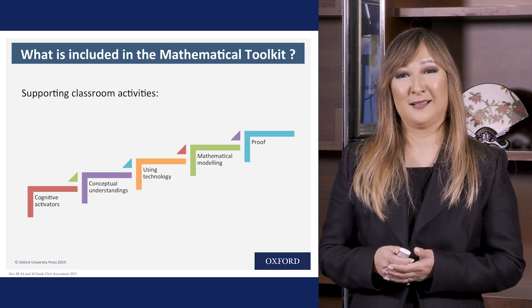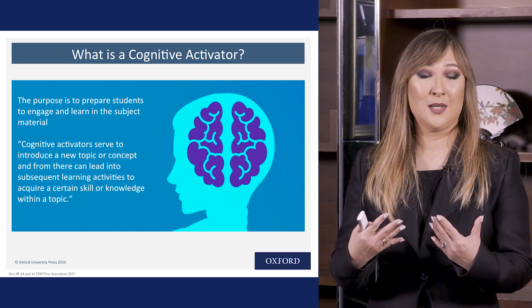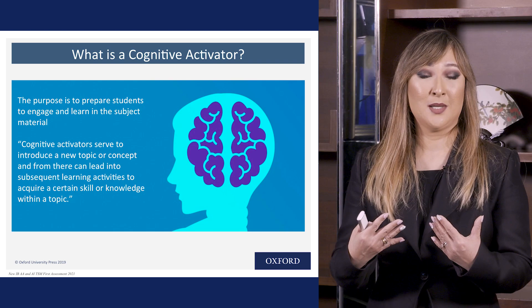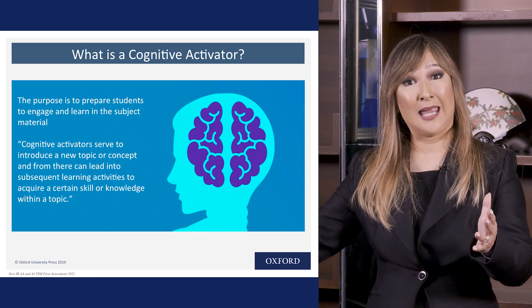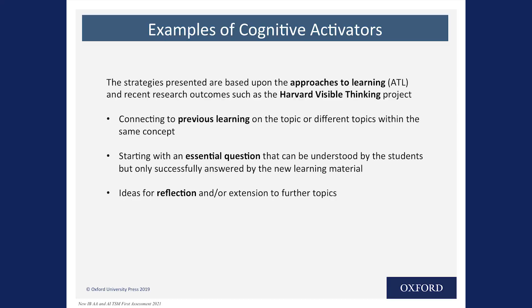So we're going to start with the cognitive activator. What is a cognitive activator? The purpose is to prepare students to start learning — to engage and learn the content. They serve to introduce any new topic or concept, and from that point students are able to take that introduction and learn further and deeper within the topic. We take lots of examples from the Harvard Visible Thinking Project, from Project Zero, and these really do align with the approaches to learning skills from the IB as well.